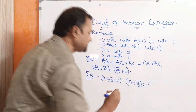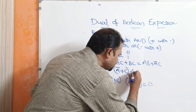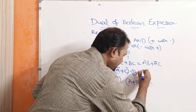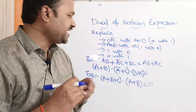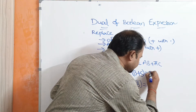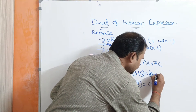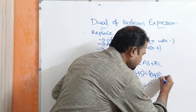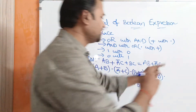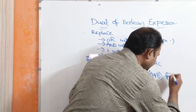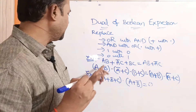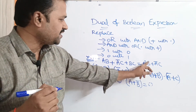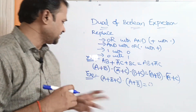So, plus — the dual of plus is dot. Next, B — write B as it is. Next, B·C — dot is replaced with plus, giving B plus C. Next, AB: A dot B — dot is replaced with plus, giving A plus B. Here we have plus — plus is replaced with dot. Next, A bar — write A bar as it is. Dot is replaced with plus. So: A plus B dot A bar plus C dot B plus C.